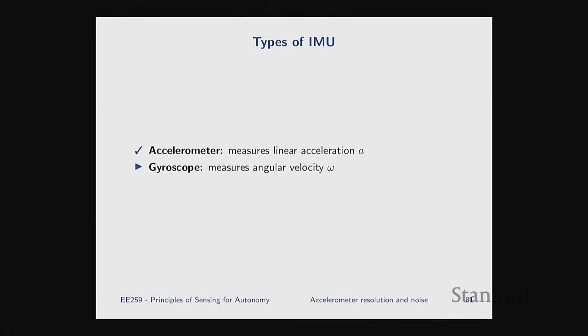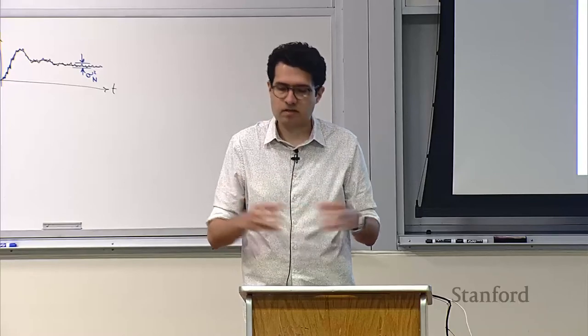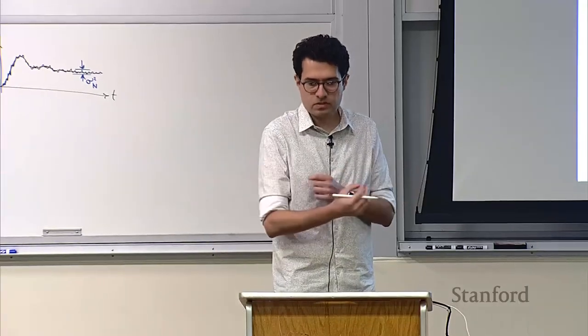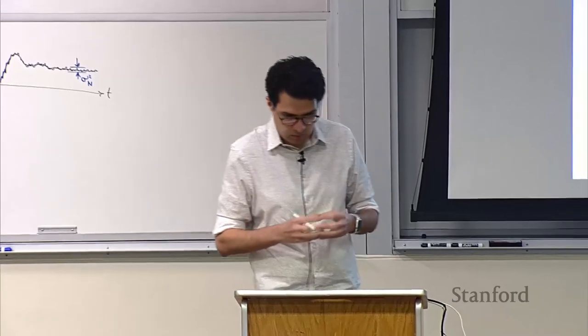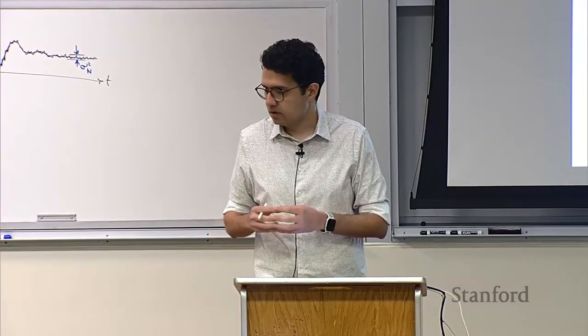With this, we are basically done with accelerometers and we're going to move forward to talk about gyroscopes. For gyroscopes, the physics is a little more complicated than accelerometers — accelerometers was just simple linear motion, spring-mass system — gyroscopes are a little more complicated. Because of that, I want to start from scratch and first build a mathematical framework that lets us analyze the physics of rotational motion. Remember, a gyroscope needs to measure angular velocity, so there's going to be rotations.